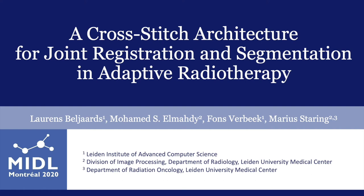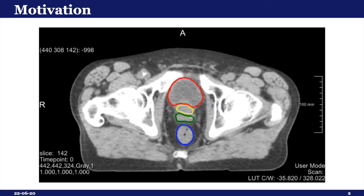In this video, we'll give an overview of a work titled 'A Cross-Stitch Architecture for Joint Registration and Segmentation in Adaptive Radiotherapy.' Here, we investigate architectural coupling of registration and segmentation in deep neural networks, and apply our approach in the context of online adaptive radiotherapy for the treatment of prostate cancer.